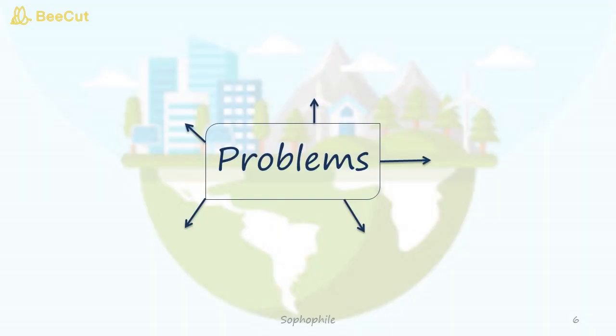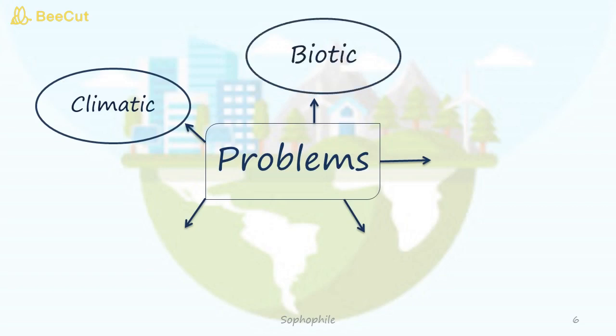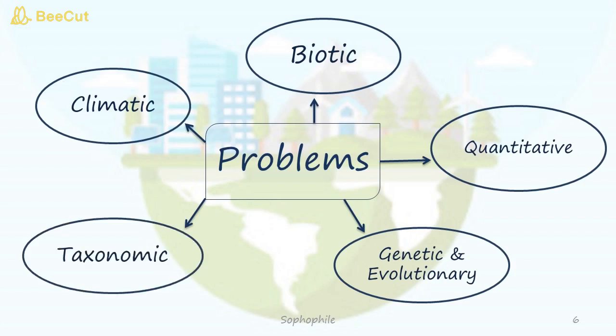What are the problems addressed in ecology? There are climatic problems such as acid rain, ozone layer depletion, melting of polar ice, floods, and the greenhouse effect. Then there are biotic problems such as flora and fauna extinction, genetic and evolutionary problems, and taxonomic problems. To study ecology, one must have knowledge of different species of organisms and plants in that environment, but due to a lack of taxonomists, one cannot always identify which species an organism belongs to.